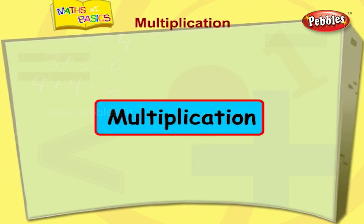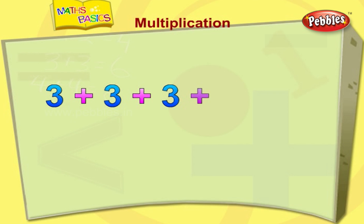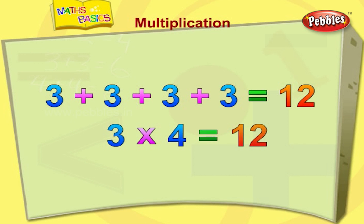Multiplication is repeated addition. That is, instead of adding the same number again and again, we can just multiply it. This is the symbol for multiplication. For example, three plus three plus three plus three is equal to twelve. Here we are adding the number three four times. This can be simply multiplied — three fours are twelve.